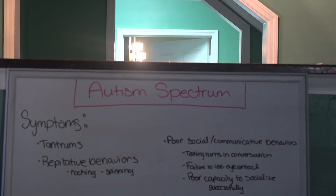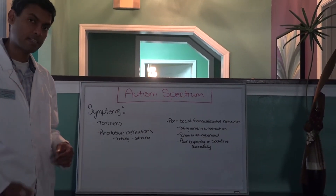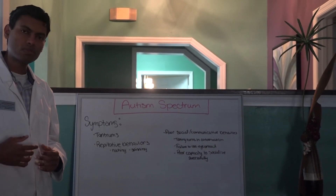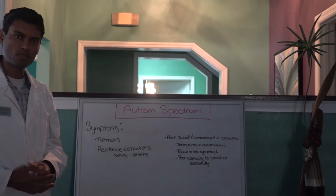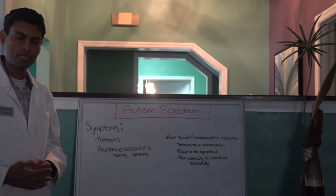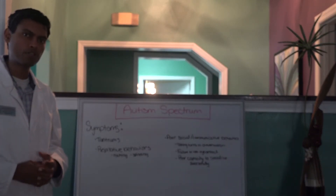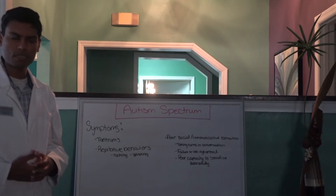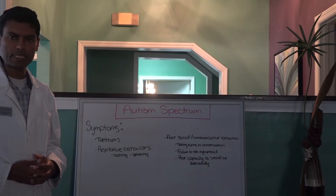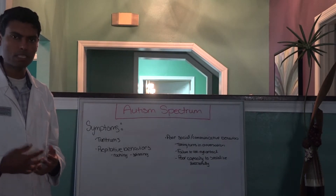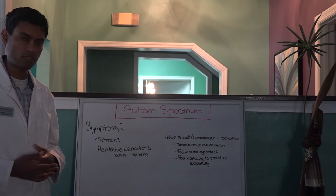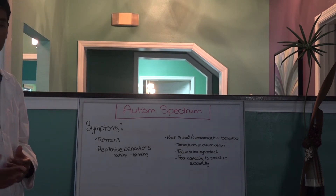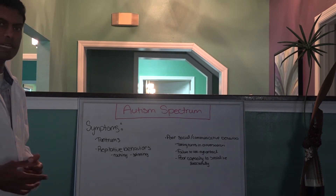The most common symptom is throwing tantrums. They tend to throw more tantrums than usual compared to other kids in their peer group. You also have to look at the situation — they may be throwing a tantrum in a situation where you don't expect them to. So it's about both the situation and the frequency of tantrums.